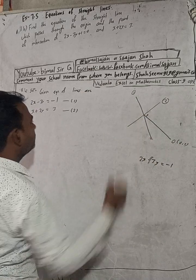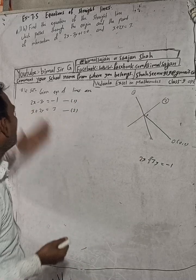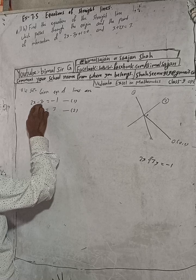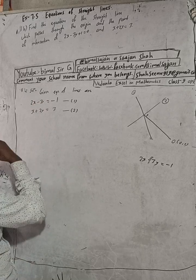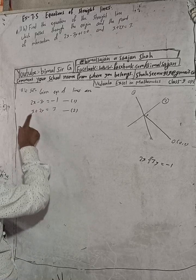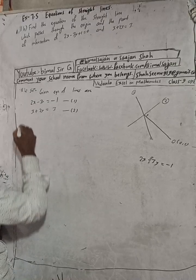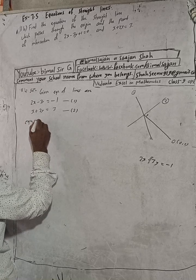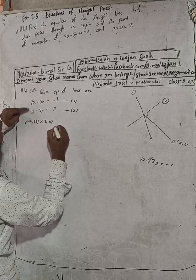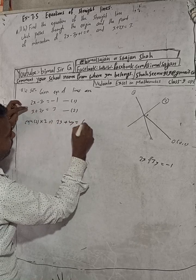First, our step is to find the P point. To find P, we have to solve these two equations to find the values of x and y. For cancellation, the coefficients must be the same. So we will multiply equation 2 by 2. Equation 2 × 2 gives: 2x + 4y = 6. This is our equation 3.